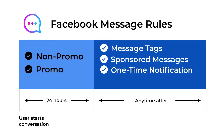I have a post on my website — I'll add the link in the description — where you can find more information about this. To keep it short: with message tags we can send messages for specific use cases; with sponsored messages we send Facebook ads through Messenger; and with the one-time notification we ask for permission to send one message outside the 24-hour window once we have that permission.